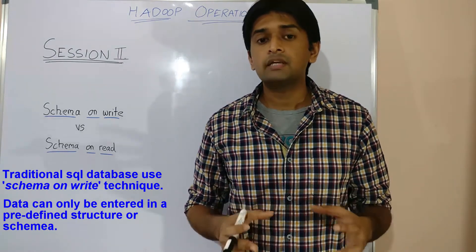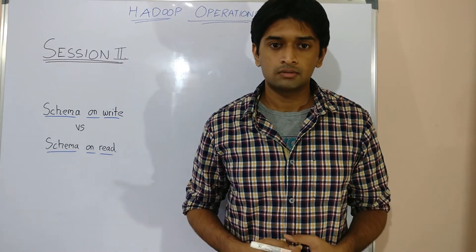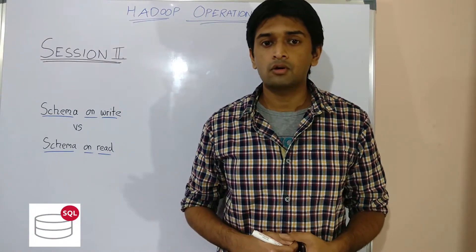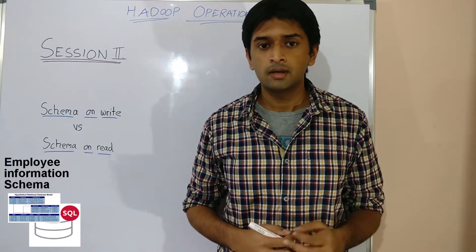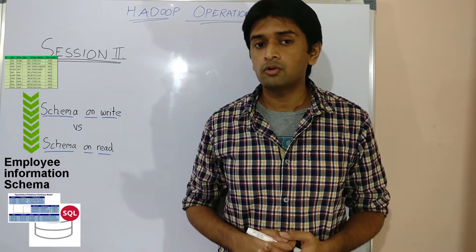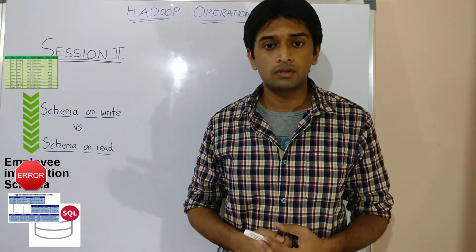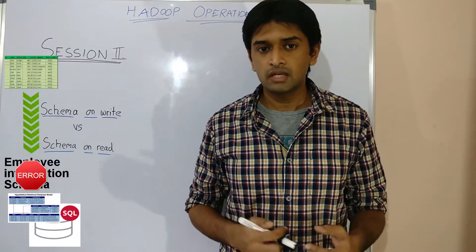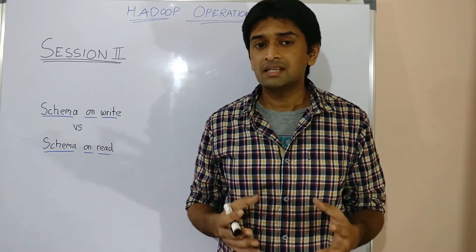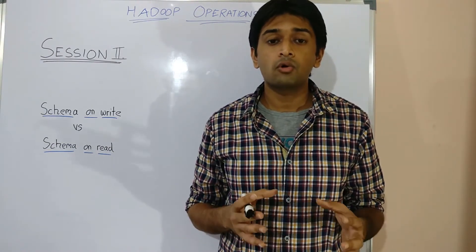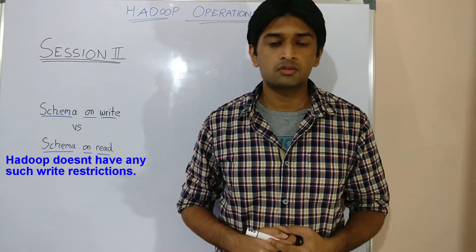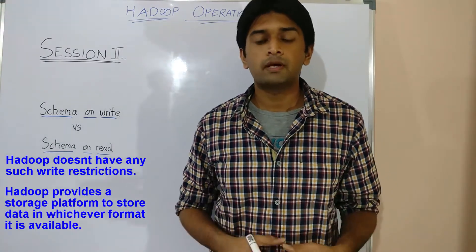This means that data can only be entered to these systems in a predefined structure or schema. For example, if you have a database for employee information and the database table has columns for name, date of birth, phone number and address, it will accept data in the same format and in the same order. This ensures that data is always accepted and stored in a predefined structure which is then easy to query and process.